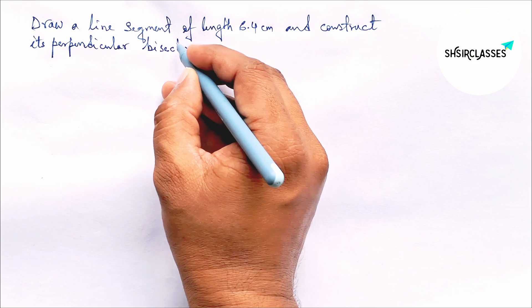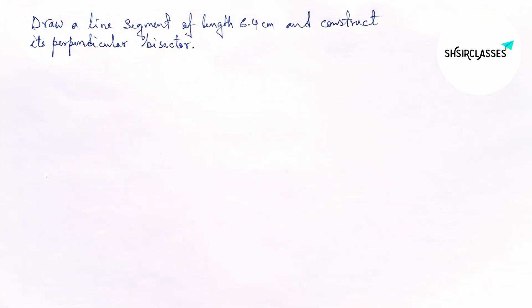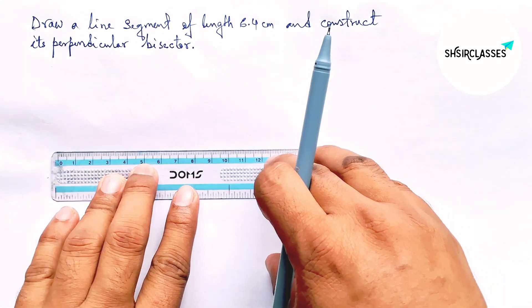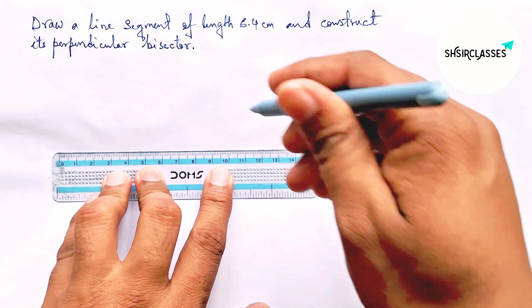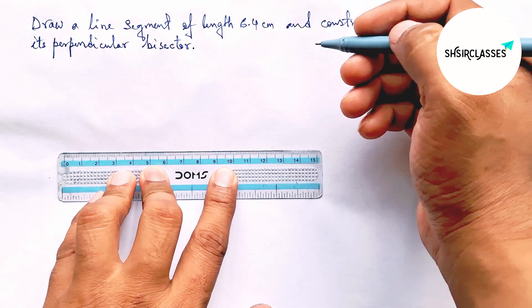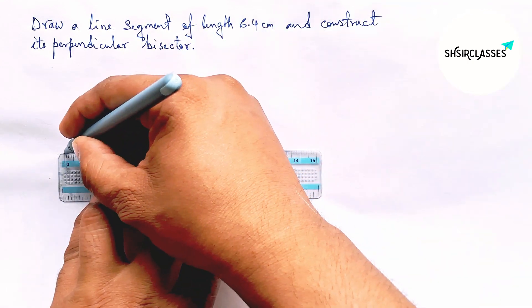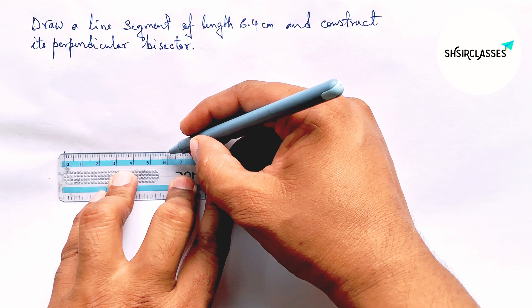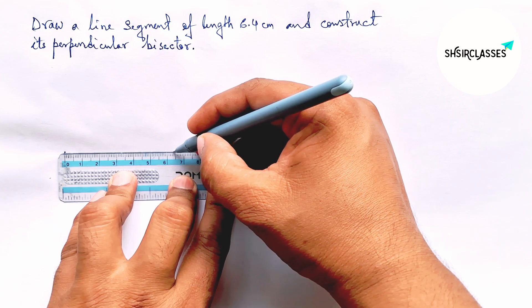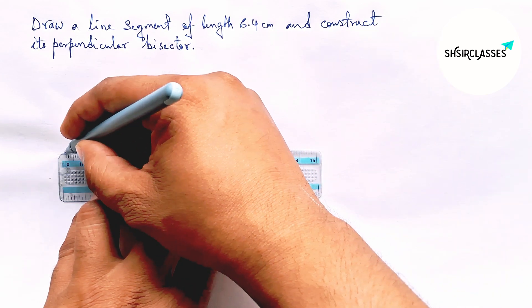So let's start the video. First of all, let us draw here a line segment of length 6.4 centimeter. So this is here 0 and 6 and counting 4, so this is 6.4 centimeter.